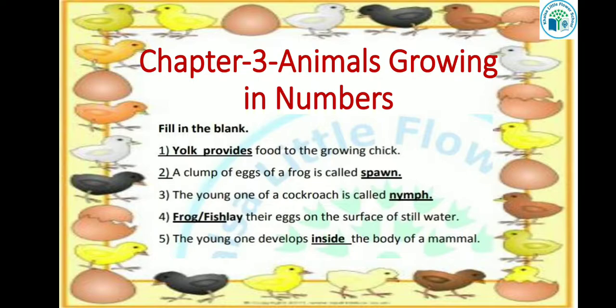Next is: a clump of eggs of a frog is called dash. Frog के eggs का जो समूह होता है, उसे क्या कहा जाता है? Yes, उसे spawn कहा जाता है. तो हमारा answer होगा spawn.